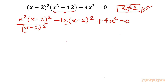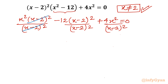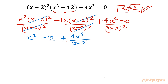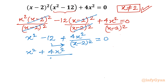Let's divide each term by (x minus 2) whole square. The first term (x minus 2) whole square cancels, the second term cancels, leaving us with: x squared minus 12 plus 4x squared over (x minus 2) whole square equals 0. Now I will take the minus 12 to the right-hand side. So x squared plus 4x squared over (x minus 2) whole square equals 12.